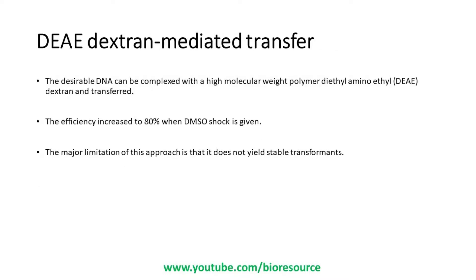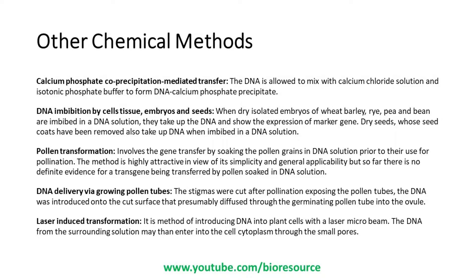In DEAE dextran mediated transformation, the desirable DNA is complexed with the high molecular weight polymer diethylaminoethyl DEAE dextran and transferred. The efficiency can be increased to 80% when a DMSO shock is given. The major limitation is that it does not yield stable transformants. In the calcium phosphate co-precipitation method, the DNA is allowed to mix with calcium chloride solution and isotonic phosphate buffer to form a DNA calcium phosphate precipitate. When actively dividing cells in culture are exposed to this precipitate for several hours, the cells get transformed. The success of transformation is dependent on a high concentration of DNA and the protection of the complex precipitate.